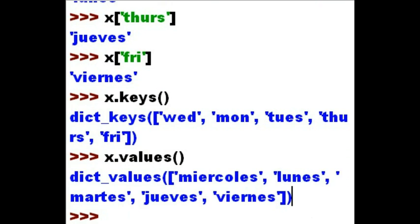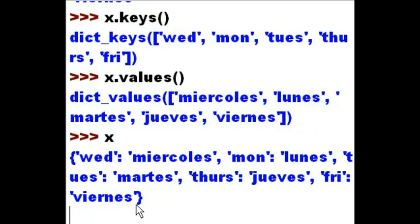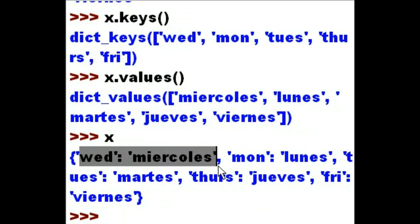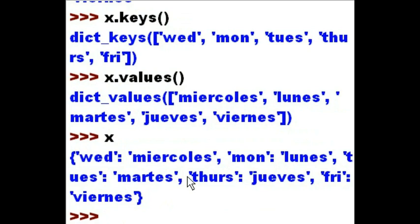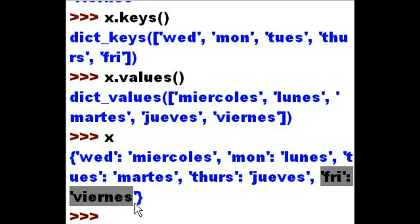That is just amazing. And of course, to see them mapped out together, just key in the letter that we assigned the dictionary to — that is, X. And there they are. Here you see Wednesday mapped to Miércoles, Monday to Lunes, Tuesday to Martes, Thursday to Jueves, and Friday to Viernes.